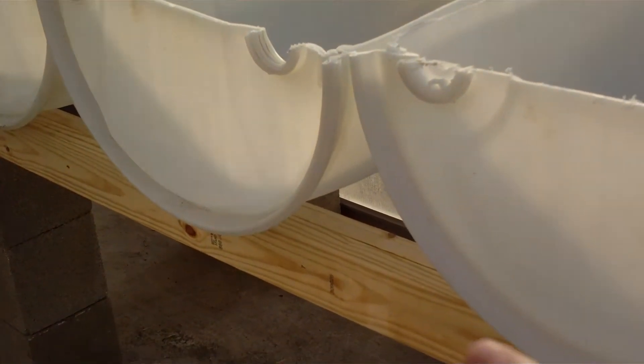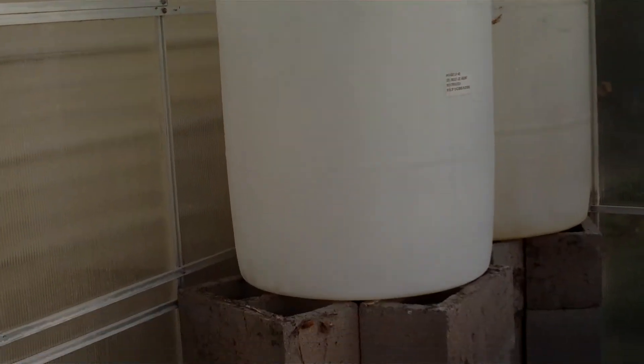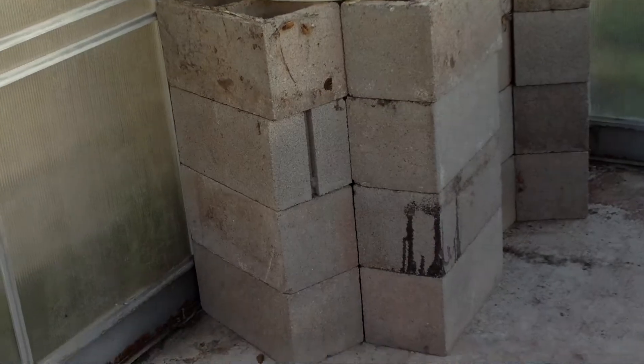And essentially I made four by fours out of them by screwing them together and then they're supported by the concrete blocks. And over here I have two 55-gallon drums with the tops cut out of them. And those are going to be my fish tanks.